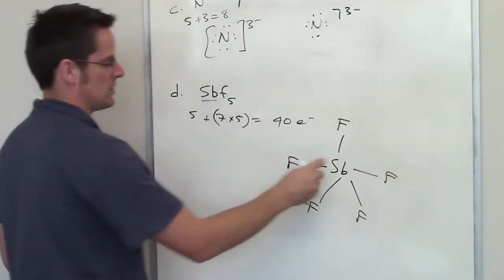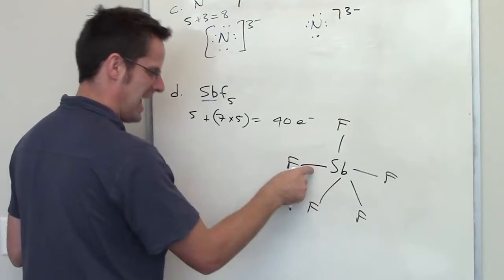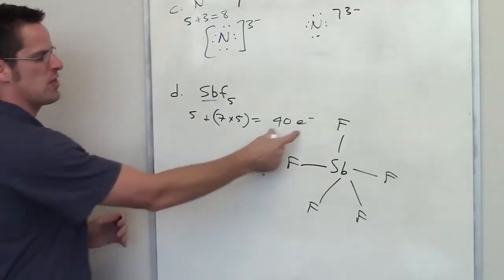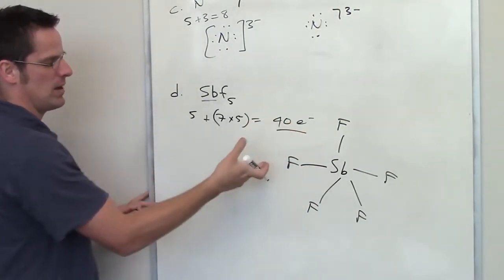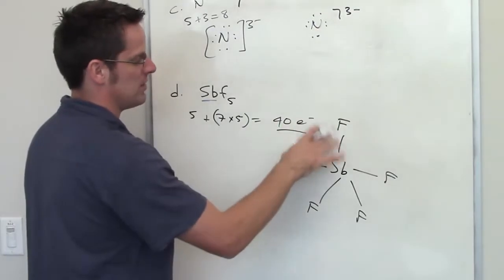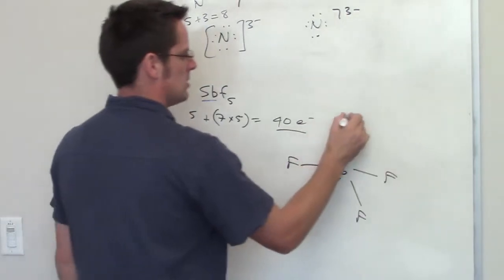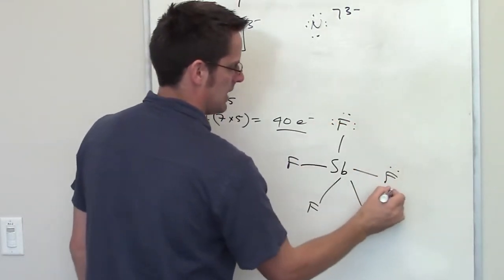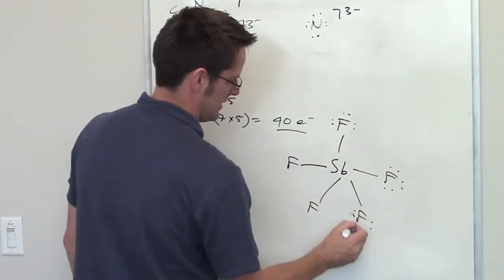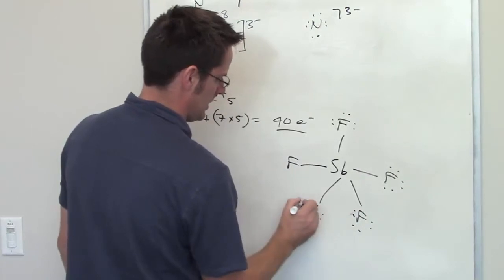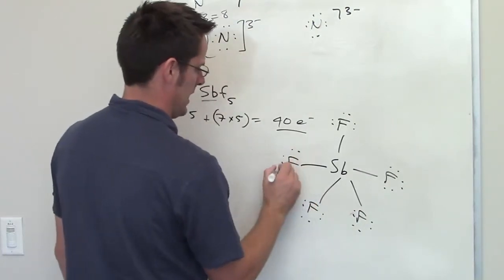And what I've done here is I've used up now 2, 4, 6, 8, 10 valence electrons. I have 30 left to play with because I've just taken away 10 from my 40. I'm going to throw all of the extra electrons on my fluorines until I run out and see what it looks like. So I've got 2, 4, 6, 8, 10, 12, 14, 16, 18, 20, 22, 24, 26, 28, 30.